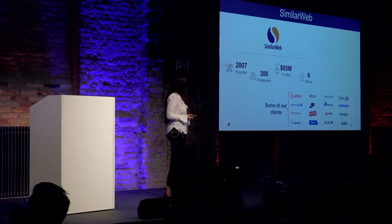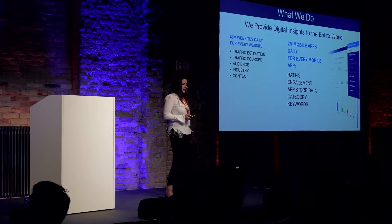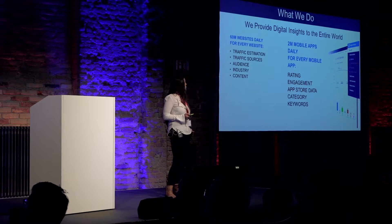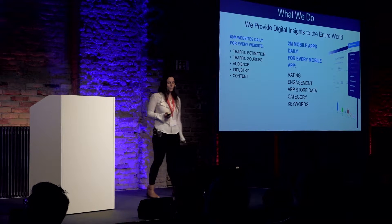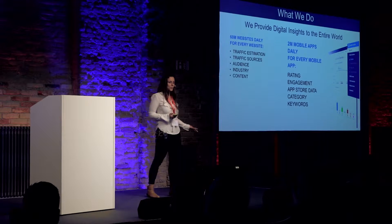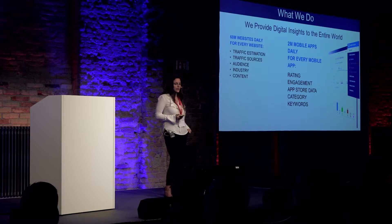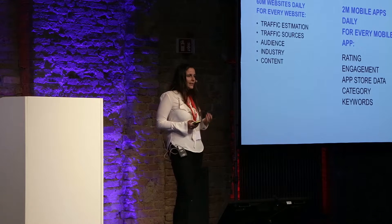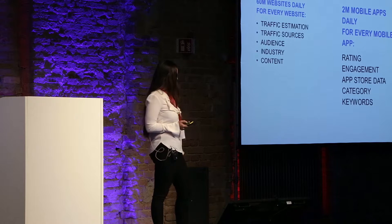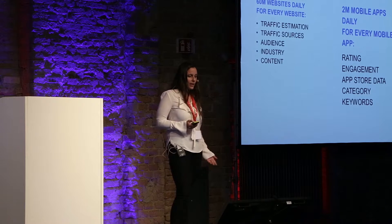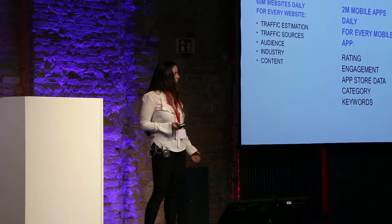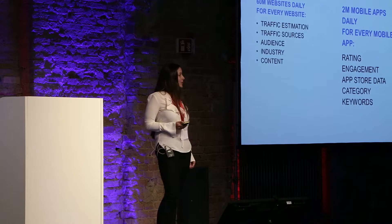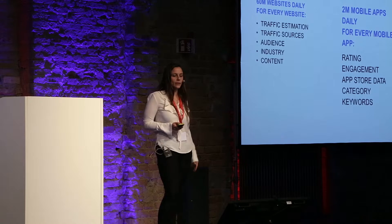Simula Web was founded in 2007, with more than 300 employees and six offices around the world. We provide estimates and valuable marketing and business intelligence insights for more than 60 million websites and 2 million mobile apps every day. For websites we provide traffic estimations — how many visits a site has, what the distribution of visits is among different traffic sources such as advertisement links, direct search, and social media. This information is used by marketers of thousands of businesses to understand their competitors and plan their online strategy accordingly.